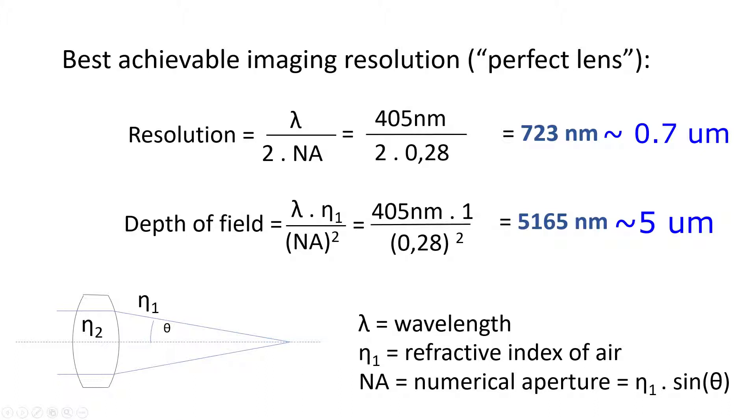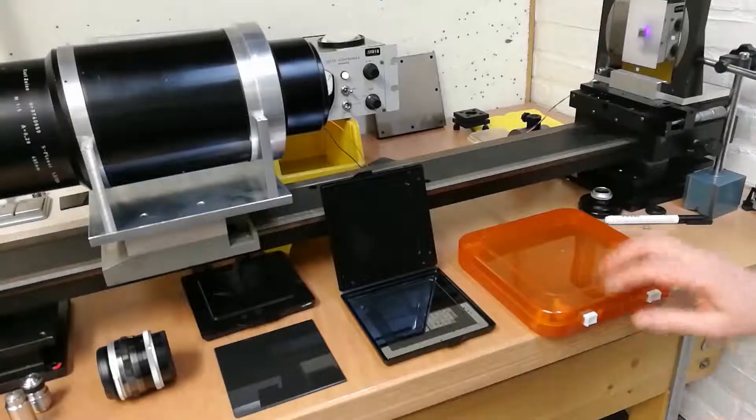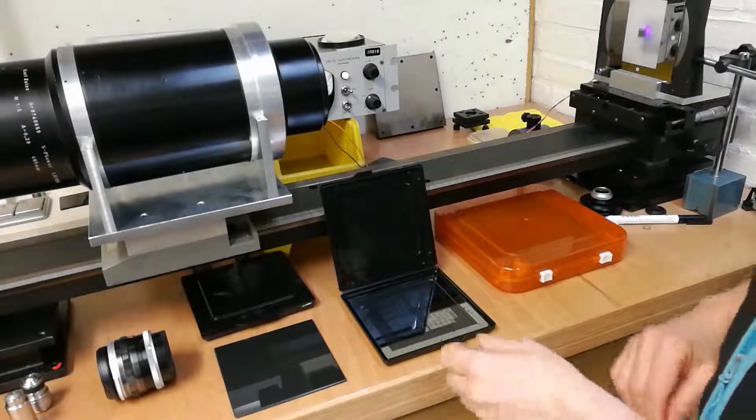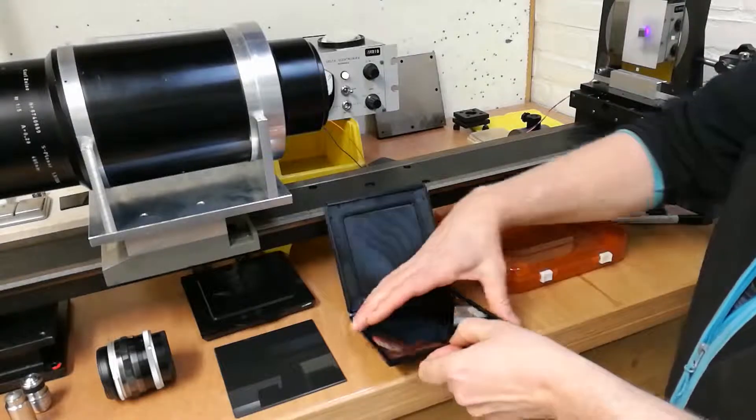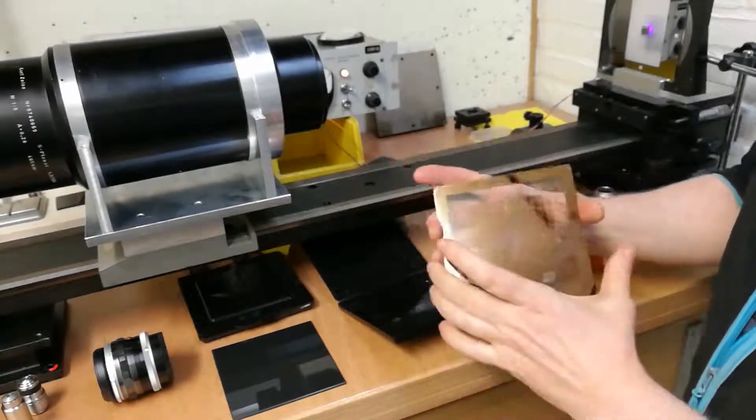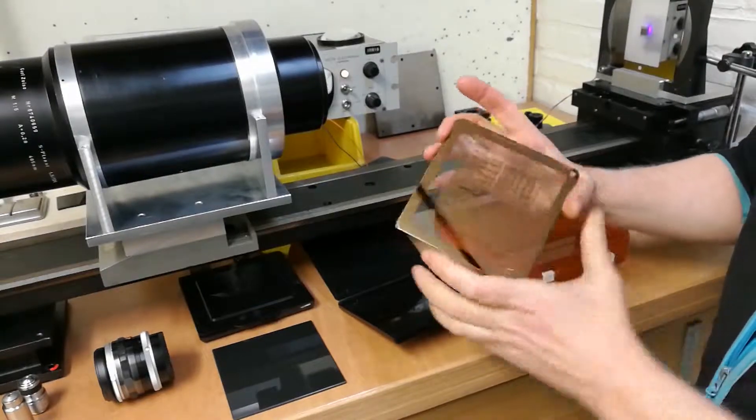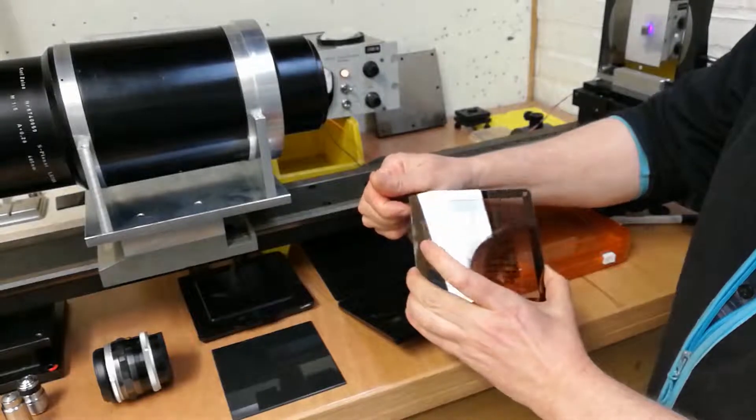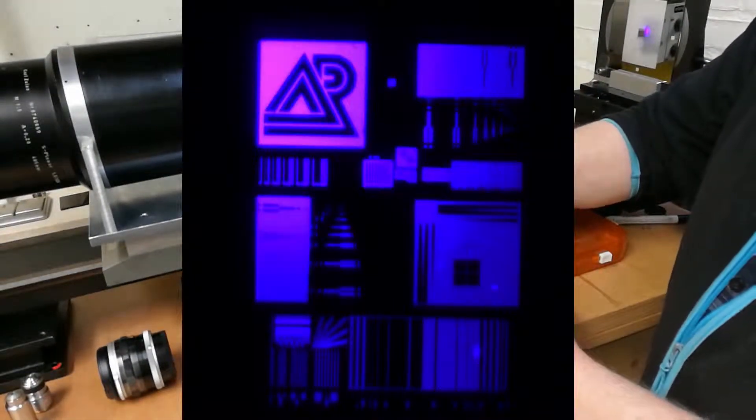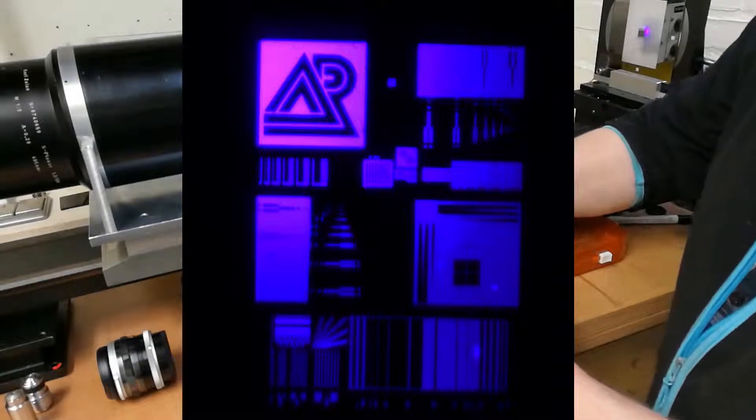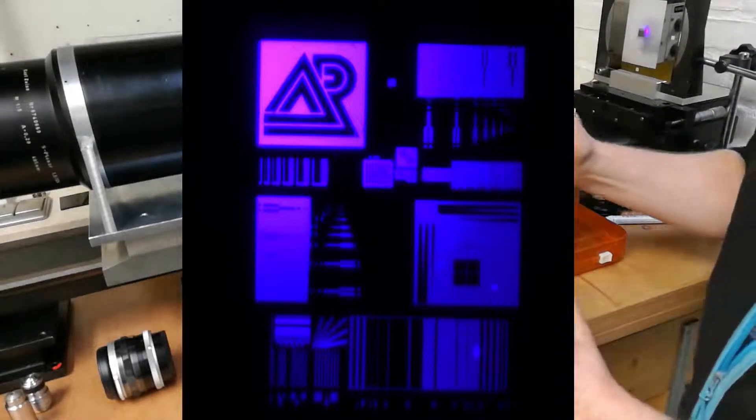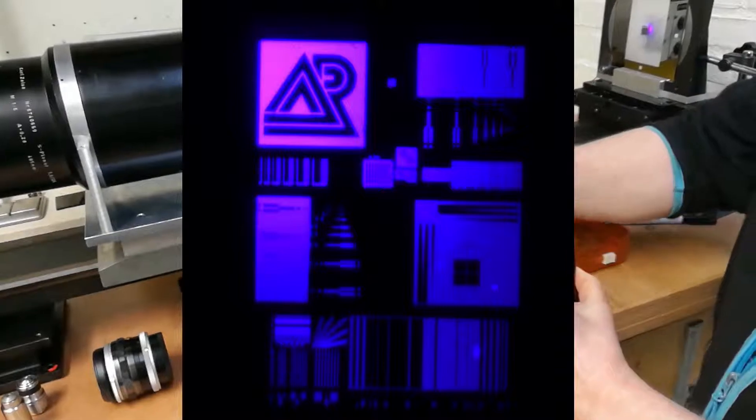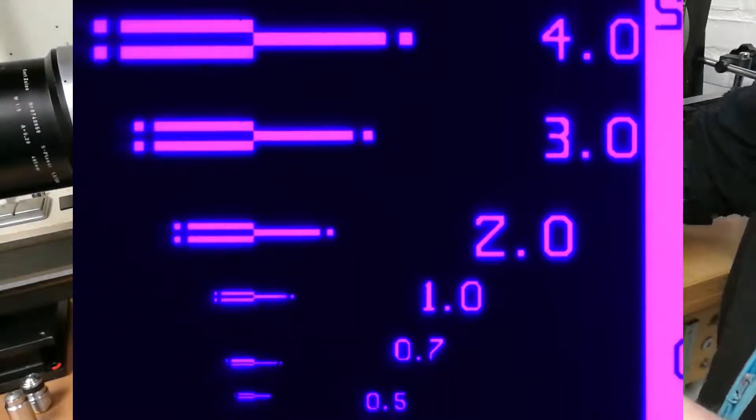Next in this video we will look at how well the Carl Zeiss performs compared to the theoretical value of the maximum resolution. For the test I had in mind I actually wanted to use a proximity mask. Why? Well there are some interesting features on a proximity mask. For example there is this test pattern on the sides of the mask which contains features of known sizes, generally in the order of 10 microns to 0.5 microns. And we will use one of these patterns to assess the quality of the lens.